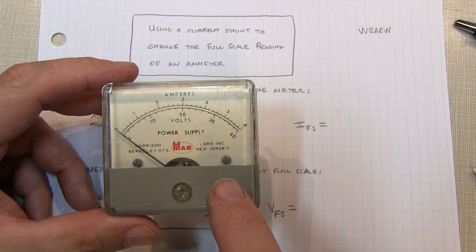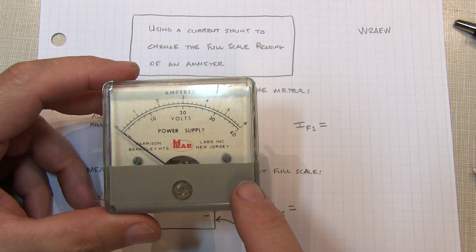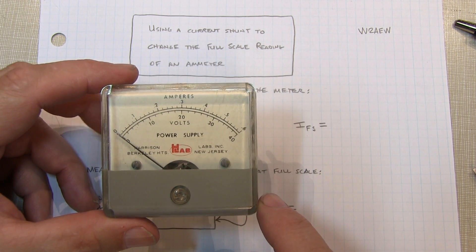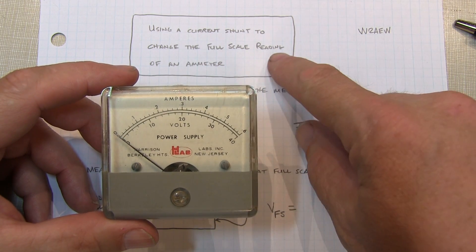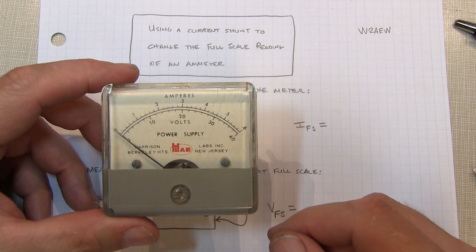In my previous video, we covered the basics of these analog panel meters and how to measure the full scale current reading of the meters so you could apply it in your project. In today's short video, we're going to take a look at how to use a current shunt to change the full scale current reading of these meters.